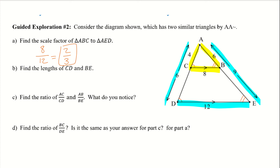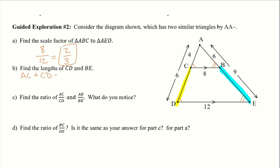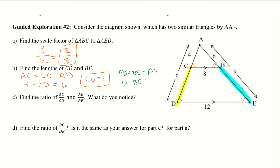Now let's find the lengths of CD and BE. We have the entire side and part of it. AC plus CD equals AD. So AC is 4, I'm trying to find CD, and AD is 6 — so CD equals 2. Then I can do the same thing with the other side: AB plus BE equals AE. AB is 6, I'm trying to find BE, and AE is 9 — so BE equals 3.